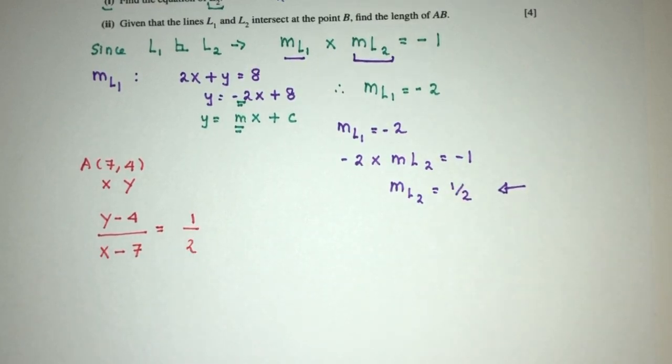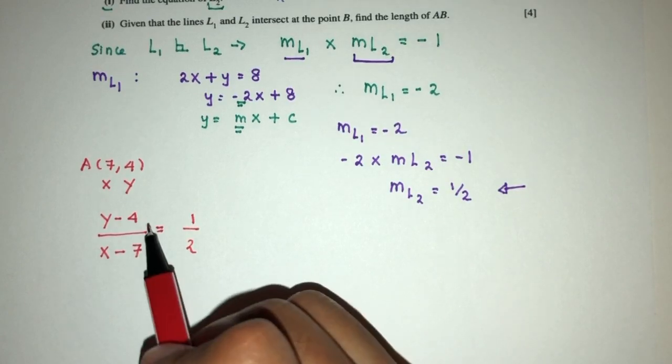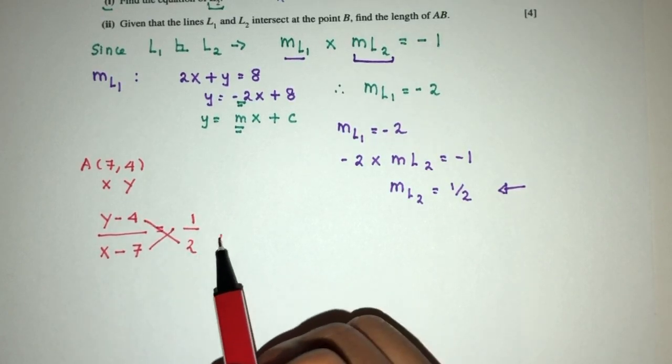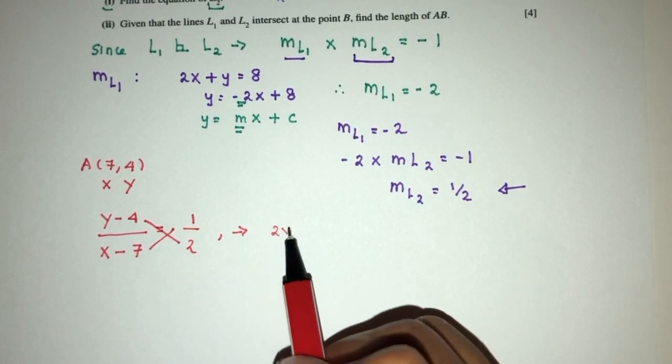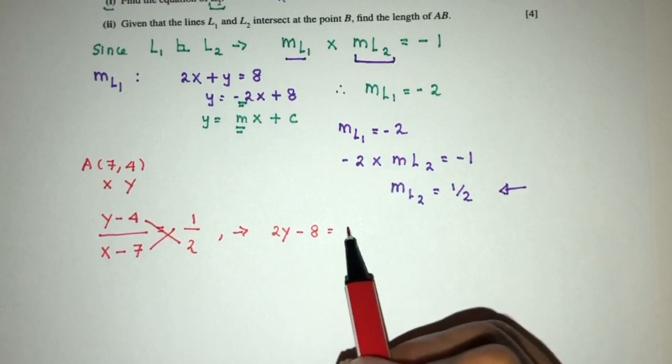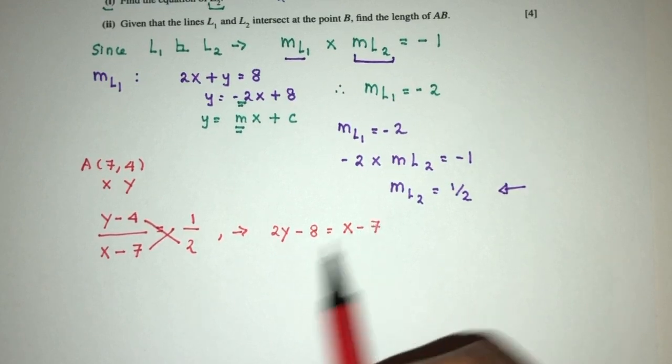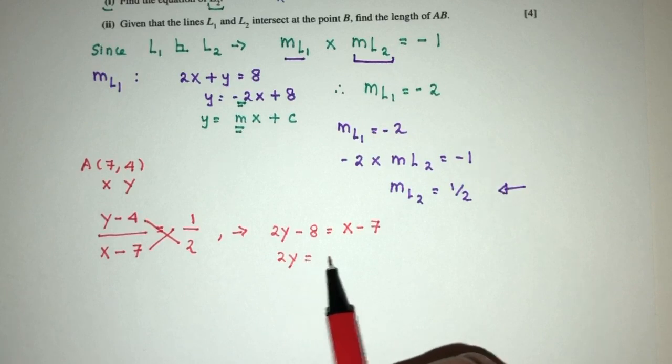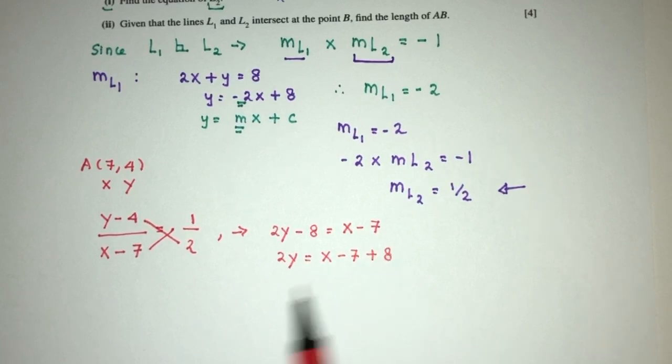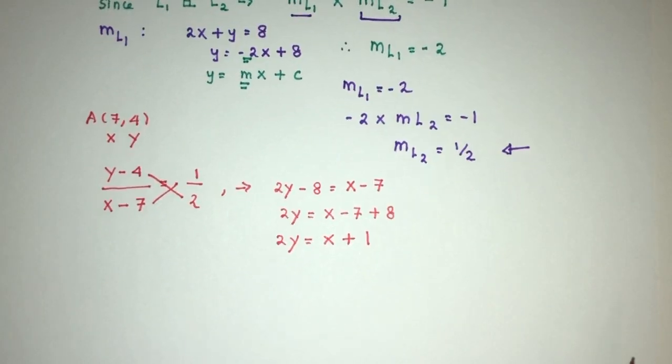Then we just have to cross multiply and simplify. That will give you 2y minus 8 equals x minus 7. So 2y will be x minus 7 plus 8, that will be 2y equals x plus 1. So this will be the equation of the line L2.